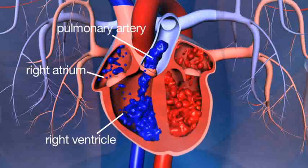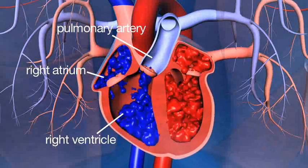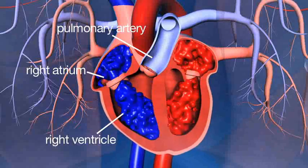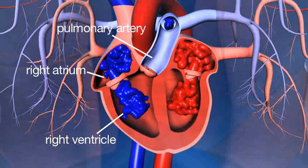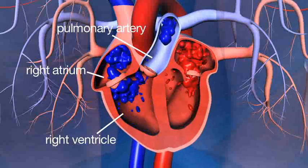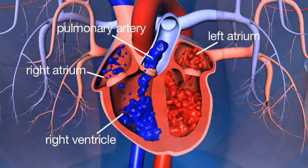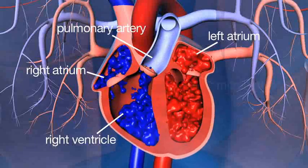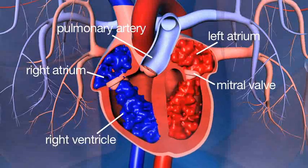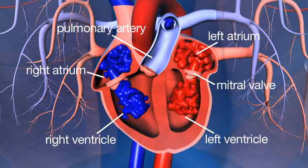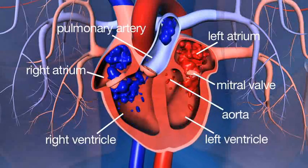That's where the blood would get reoxygenated. The carbon dioxide would get removed, so the blood goes from blue to pink and returns back into the left atrium. The blood then goes through the mitral valve into the left ventricle and out the aorta.